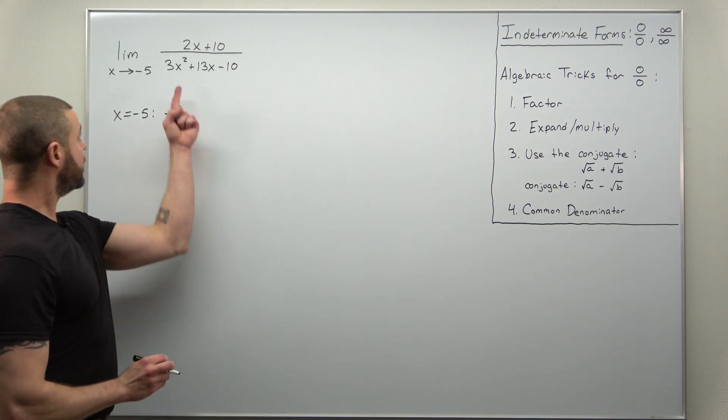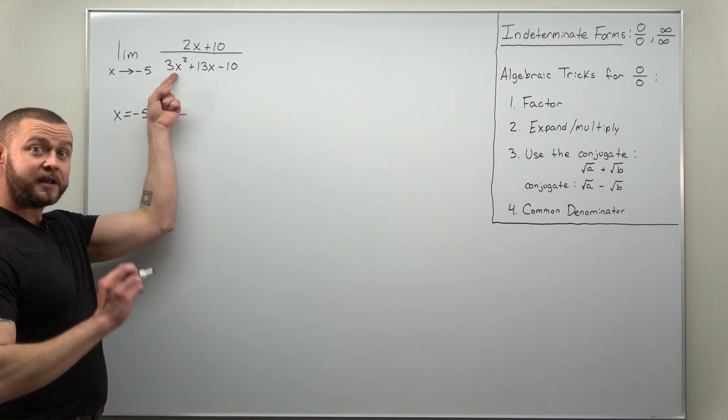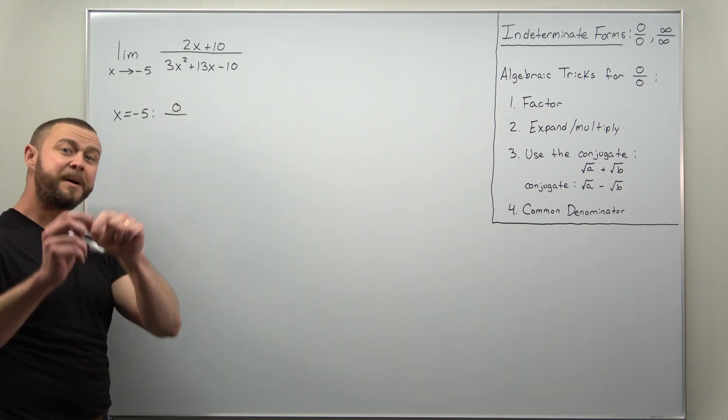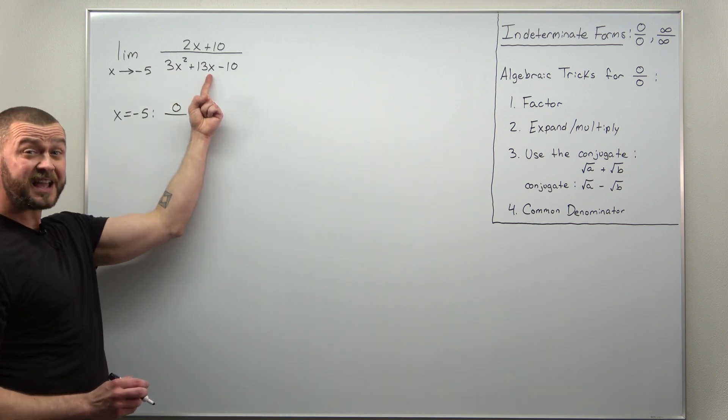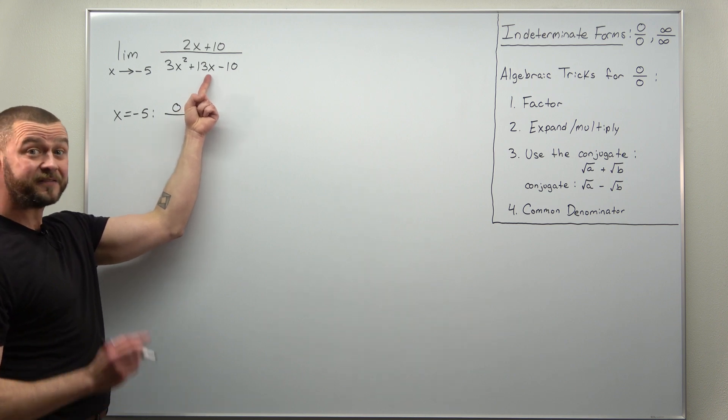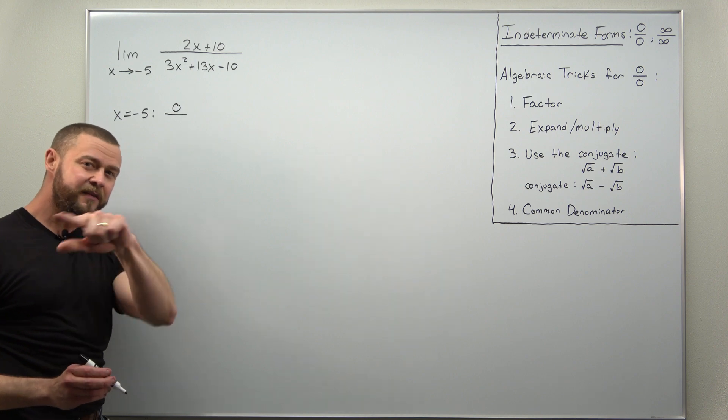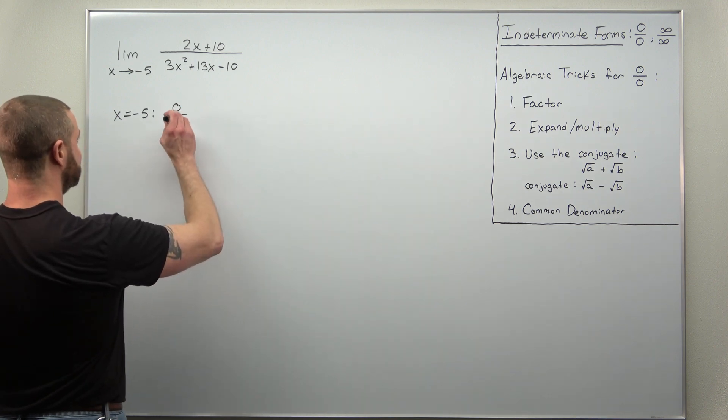Let's check the denominator. Plug in x is negative 5. You'll get negative 5 squared positive 25 times 3 positive 75. Plug in x is negative 5 here. You'll get negative 65 minus 10 negative 75. Your denominator is going to evaluate to 0 as well.